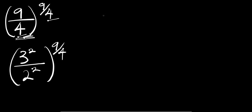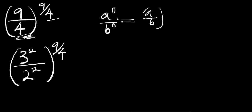Now, if you have a to the power of n divided by b to the power of n, this equals a divided by b, all to the power of n. So let's apply this identity right here.